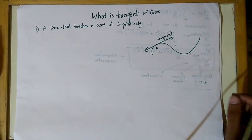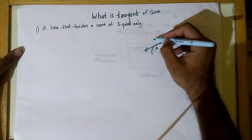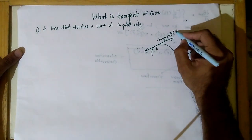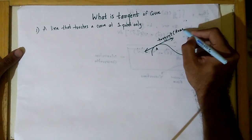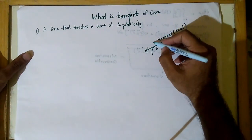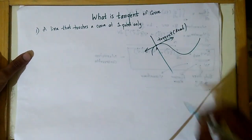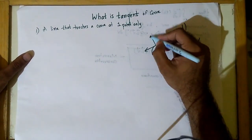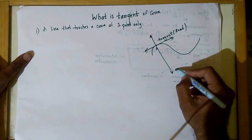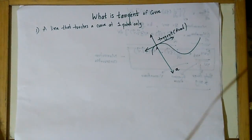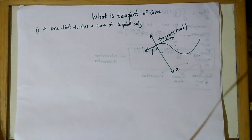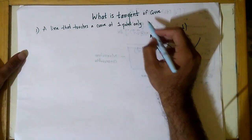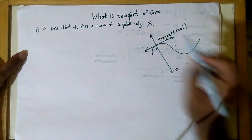Now I argue — suppose this is another line which also touches the curve at one point. Is this a tangent? No. So that definition does not hold good.